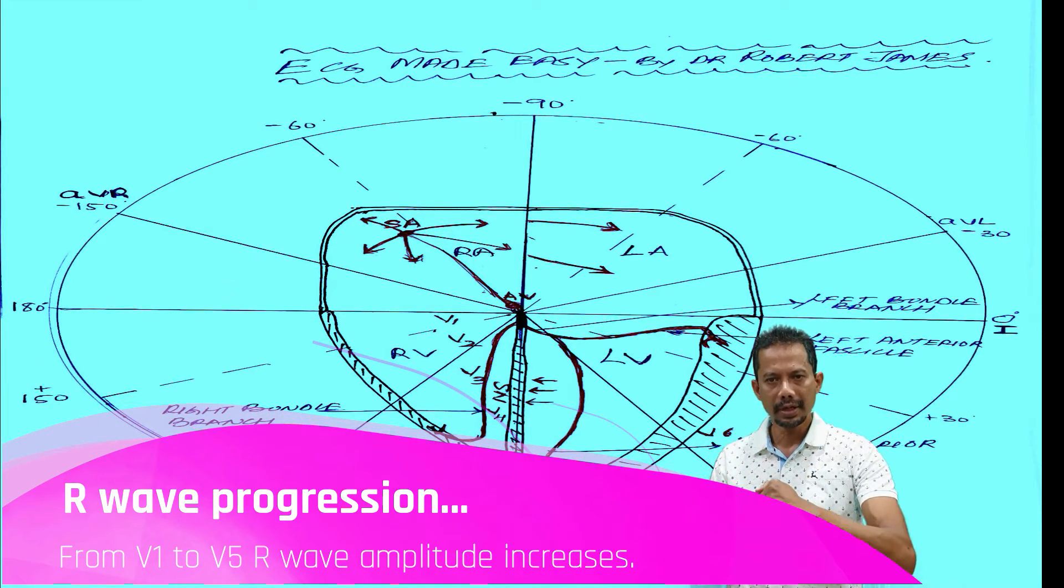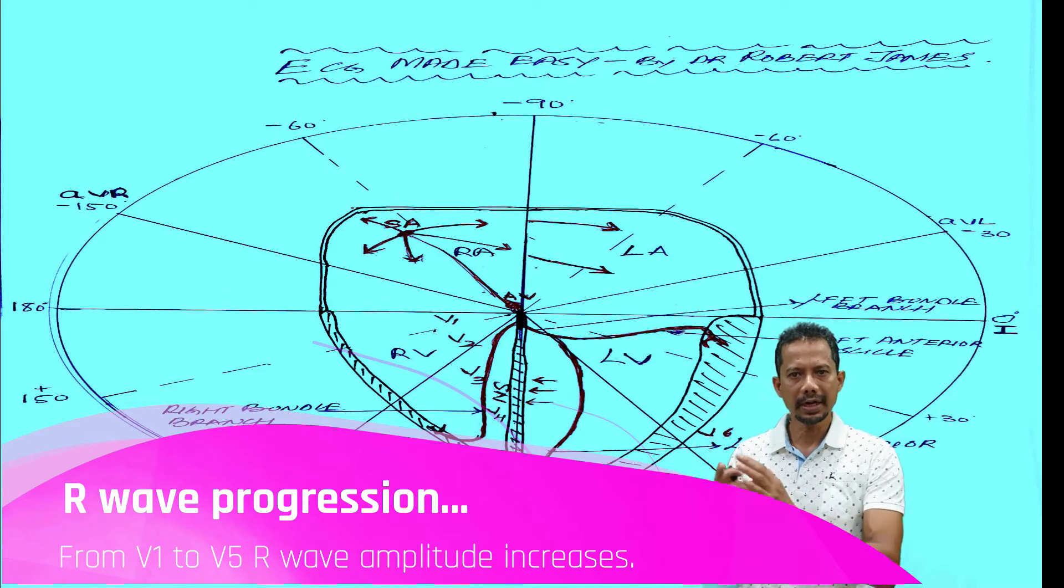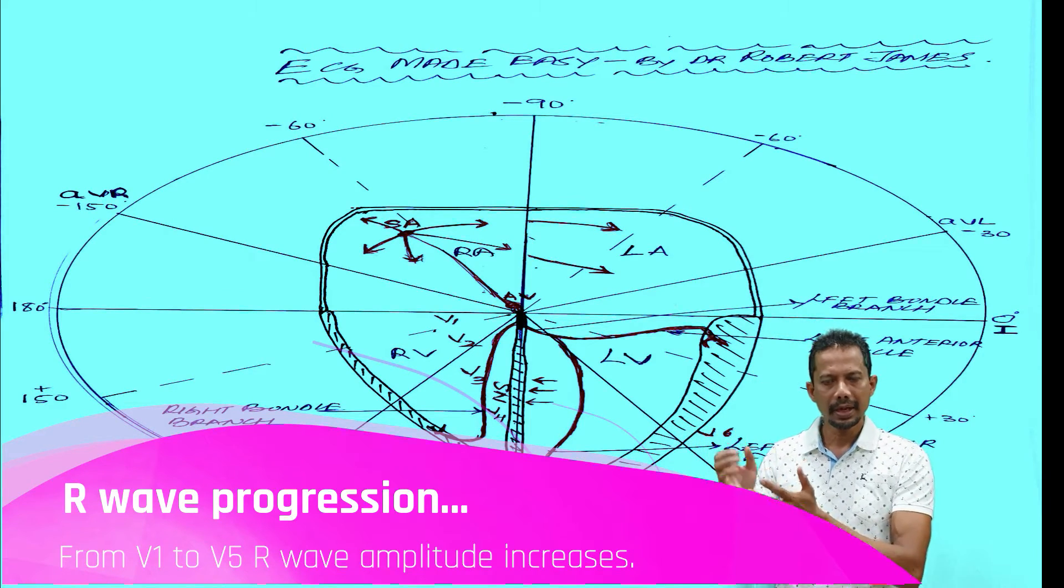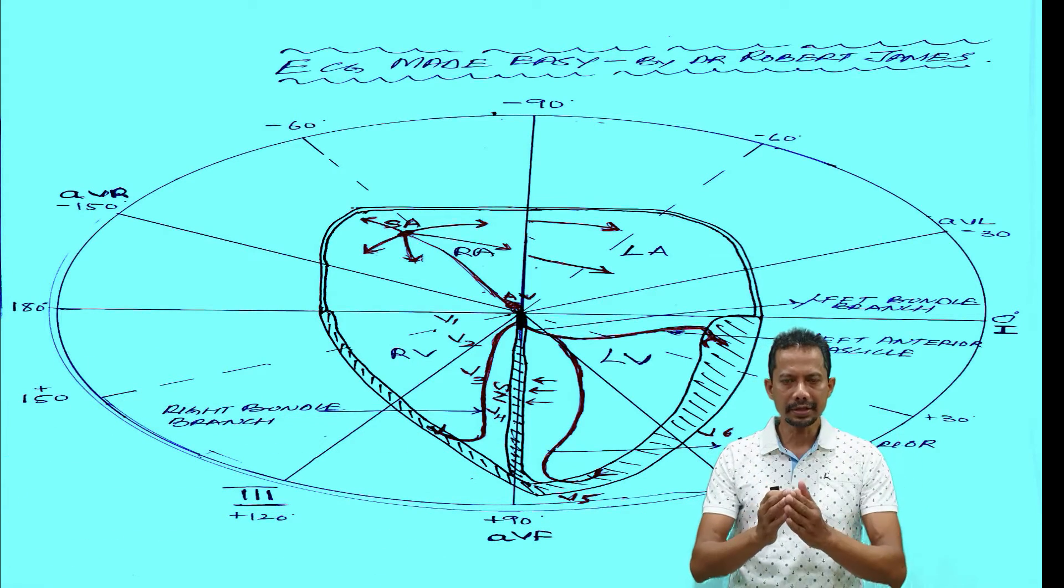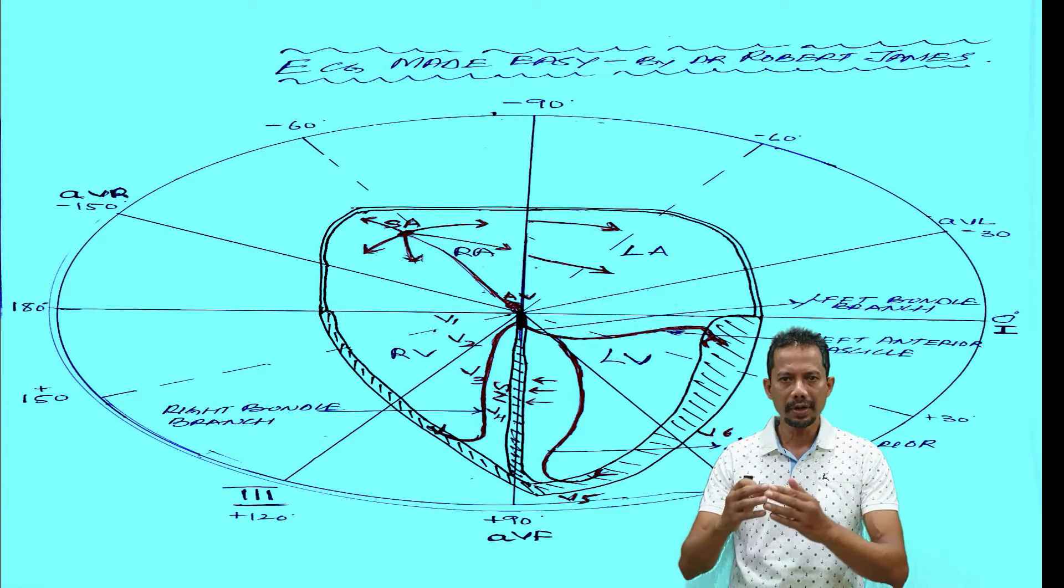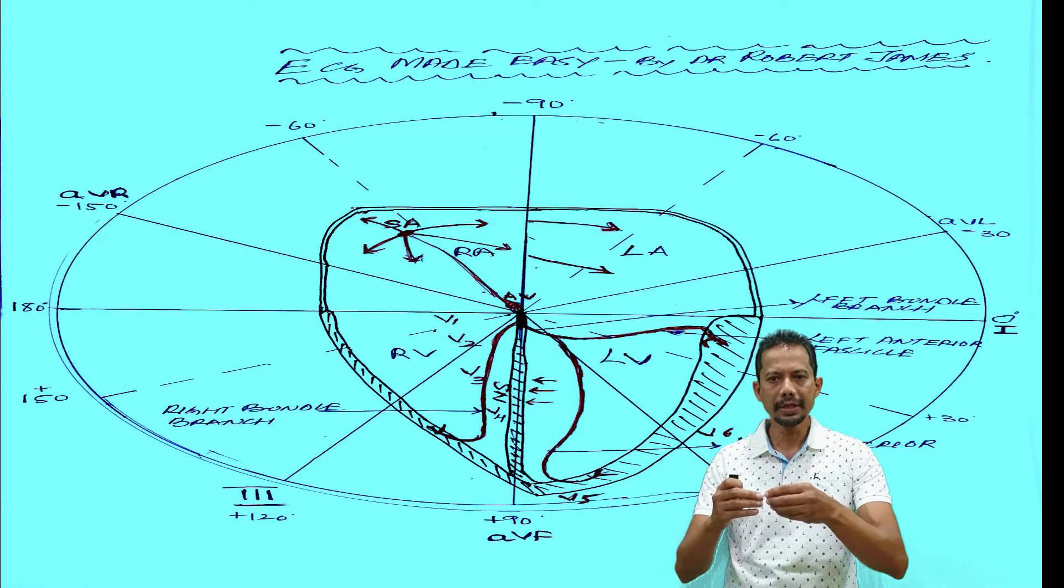As we keep on moving towards the bulkier side of the LV, the lateral wall will be the bulkiest. There is a transition zone between V3, V4 where the R wave eventually becomes taller than the S wave.